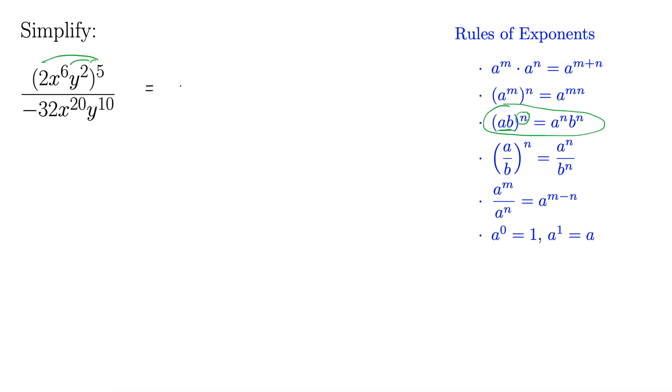Okay, so that gives us 2 to the 5th, x to the 6th all to the 5th, and then y squared to the 5th. Right, you don't have to do it in this level of detail but you can. The denominator stays the same. Y to the 10th.